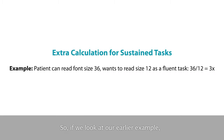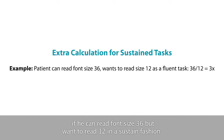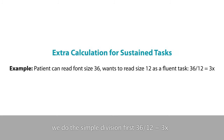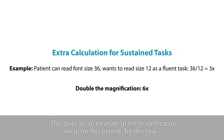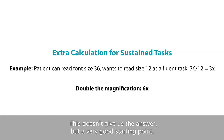Looking at our earlier example again: if the patient can read font size 36 but wants to read size 12 in a sustained fashion, we first do the division — 36 divided by 12 equals 3 times magnification — then double it to allow an acuity reserve, giving a total of 6 times magnification. This gives us an estimate of magnification need for this patient for this task. It's not a definitive answer, but a very good starting point.